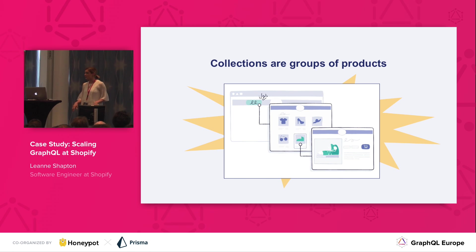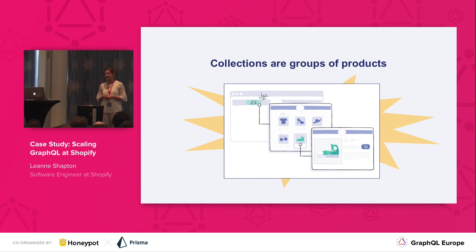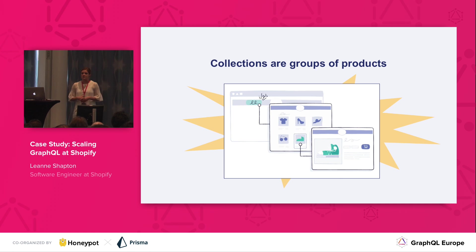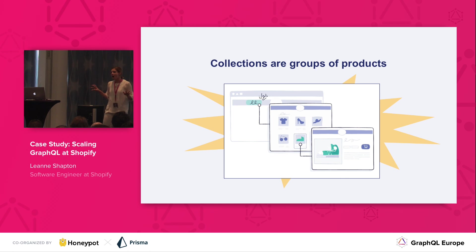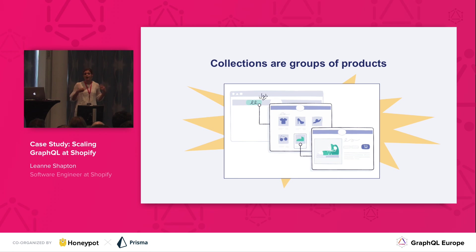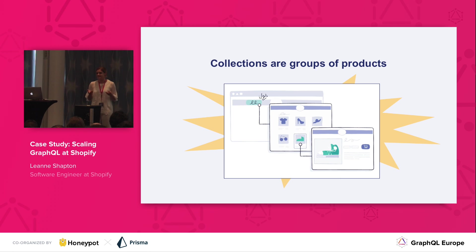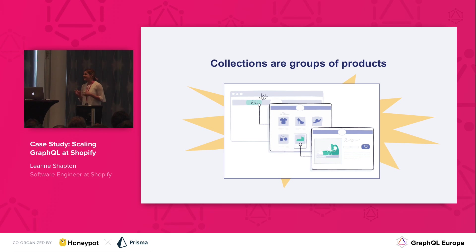We're going to imagine that we are one of these component teams — we are the collections team today. Collections are just a group of products; they make it easy for users searching your store to find particular products. For example, a collection could be 'summer clothing.' There are two different types of collections: manual collections and automatic collections. Automatic collections mean products are automatically published to a collection if they follow a particular rule, while manual collections are products that have to be manually published and don't have a rule.